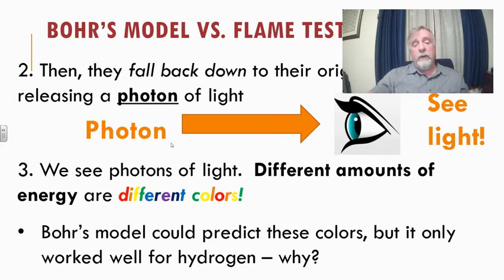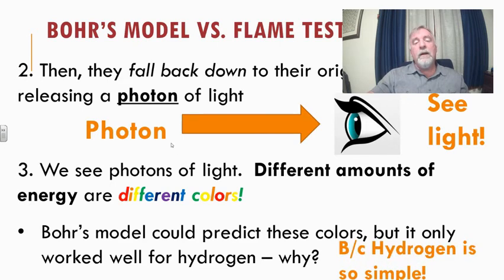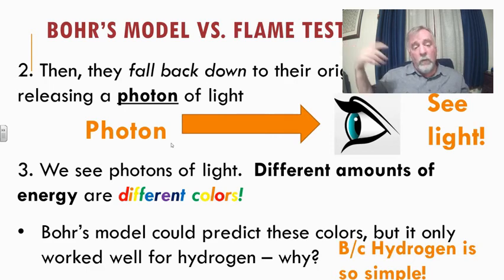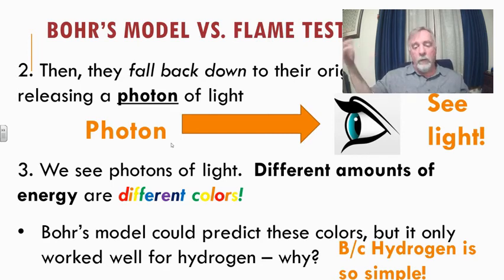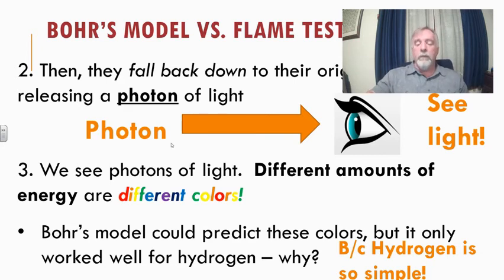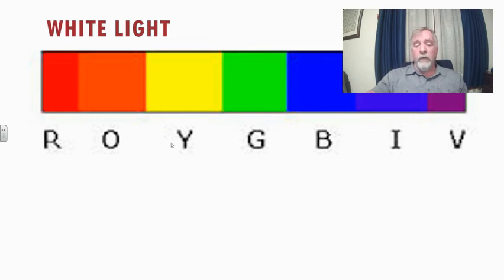Bohr's model worked well for hydrogen but only so-so for other atoms. Why did it work so well for hydrogen? Because hydrogen is the simplest atom — just a single proton and a single electron, a very simple system. Bohr's model being a simple model worked really well for that. As we tried more complex atoms, Bohr's model broke down, and that's when we started adding more complexity. We see light as red, orange, yellow, green, blue, indigo, violet — our rainbow — and those different colors have different energies.